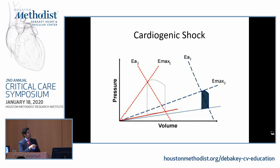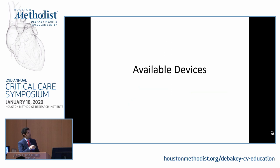In cardiogenic shock, contractility decreases and the loop moves all the way to the right, decreasing stroke volume while myocardial oxygen consumption increases significantly. This is why we use mechanical support devices.